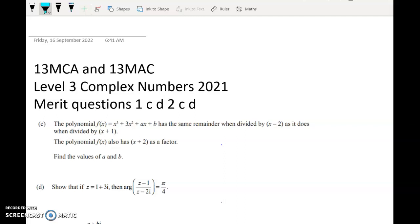So the first one is about the factor and remainder theorem. We're given a polynomial, this is it here, and we're told that it's got the same remainder when we divide by x minus two as when we divide by x plus one. And that's not going to be enough to find the value of both a and b, but we're then also told that the polynomial has x plus two as a factor. So you can see where this is going to go, we're going to end up with a couple of simultaneous equations.